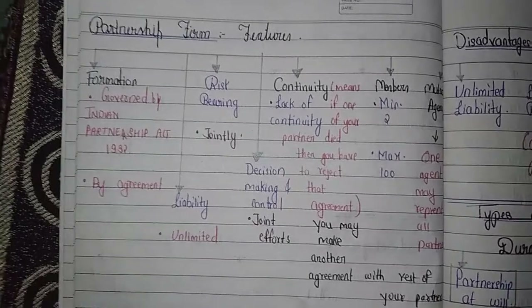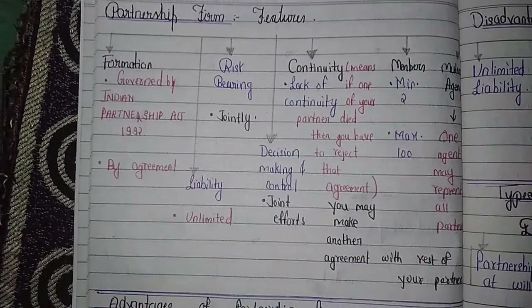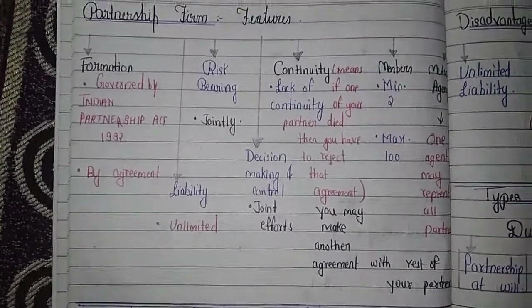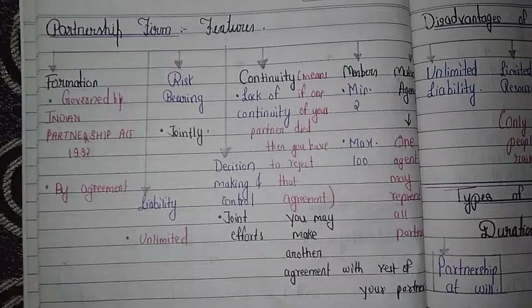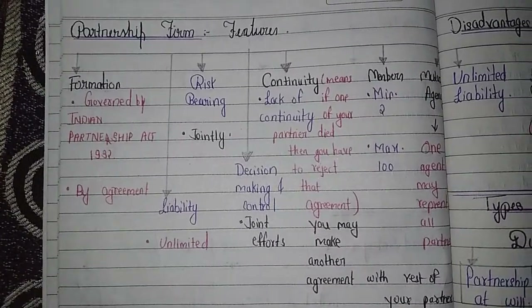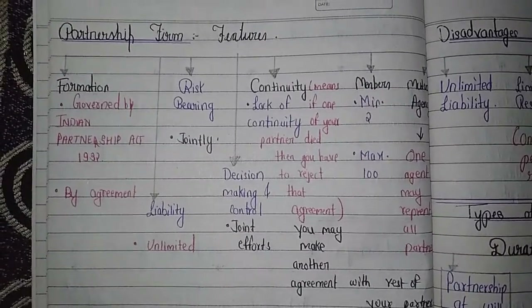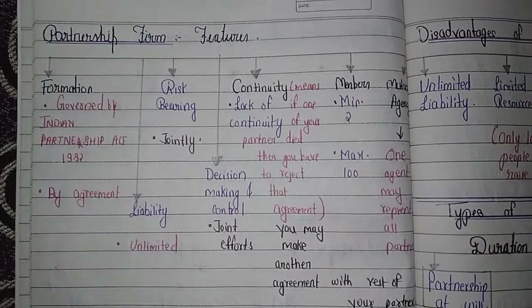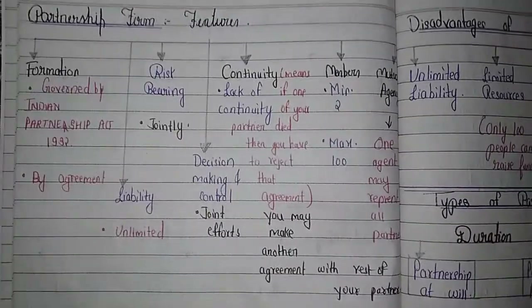Now we will talk about partnership firm features. First is formation — the formation of a partnership firm is very simple, you just need to make an agreement and you are good to go. It is governed by the Partnership Act 1932. The liability is unlimited for all the partners, and risk bearing is joint, meaning all partners bear the risk equally.